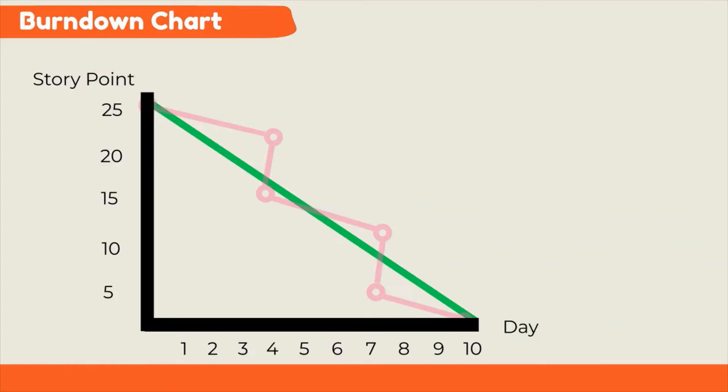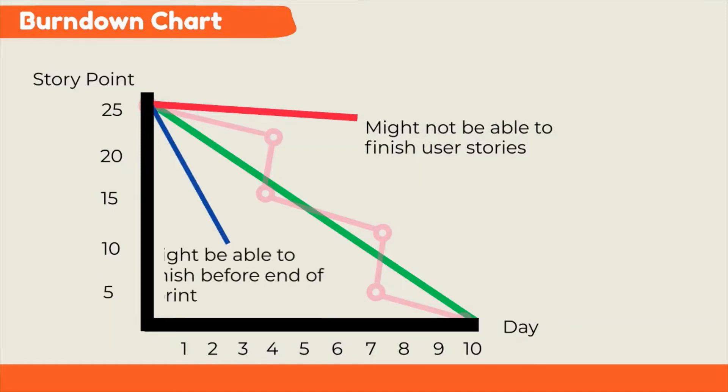If after a few days the team sees they are above the ideal line, they need to find ways to come back on track. Otherwise, they will not be able to finish their user stories. And if they are way below the ideal line, that means they might finish their user stories before end of sprint, and they can ask the product owner for another user story.